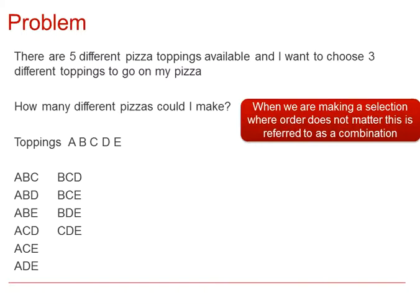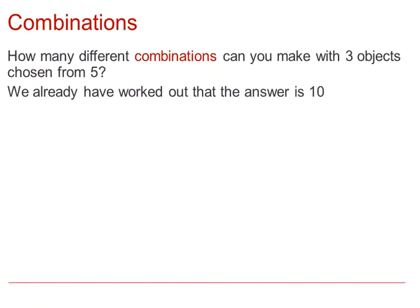When we looked at permutations, we looked at filling the slots. For example, our first topping would be chosen from five, the second from a choice of four, and the third from a choice of three, which you might think was 60. But we want different combinations with three objects chosen from five, and we already know that the answer is ten from our listing.